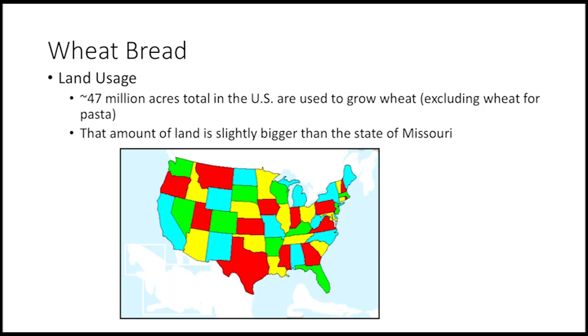We use a lot of land to grow wheat. 47 million acres of U.S. land are used to grow wheat, not counting wheat used for pasta. That amount of land is slightly bigger than the state of Missouri.